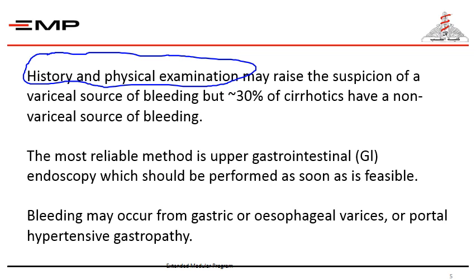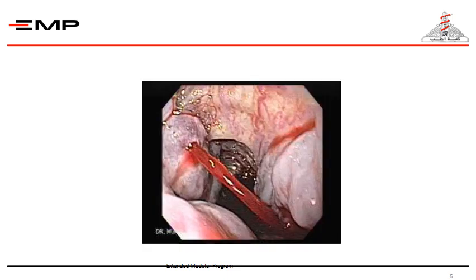However, endoscopy should not happen except after initial resuscitation. Upper gastrointestinal endoscopy should be performed as soon as feasible, and as we said, it is the most reliable method and tool for diagnosis and treatment. Mind you, bleeding may occur from gastric or esophageal varices, or portal hypertensive gastropathy.